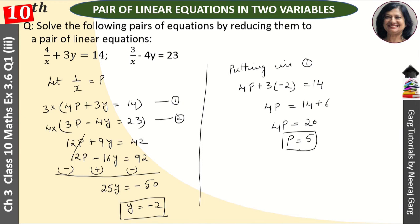So p = 5. Since p = 1/x, we have 1/x = 5, therefore x = 1/5. We already found y = -2, so our solution is x = 1/5 and y = -2.